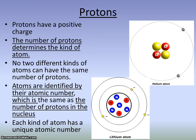Protons are very important to the atom. The number of protons determines the kind of atom — you know what kind of atom it is just by the number of protons. No two different kinds of atoms have the same number of protons. Atoms are identified by their atomic number, which is the number of protons. The atomic number of an atom is absolutely unique to that atom, and the atomic number tells us the number of protons.